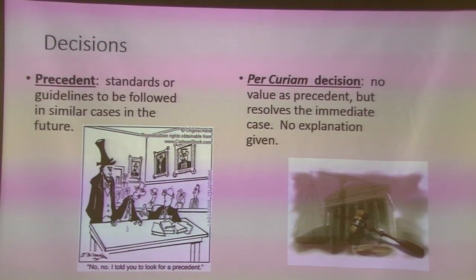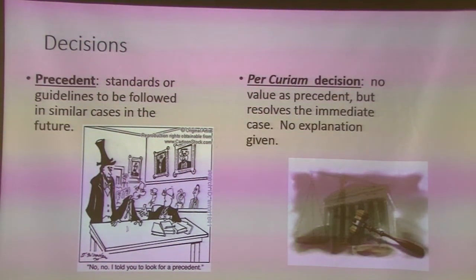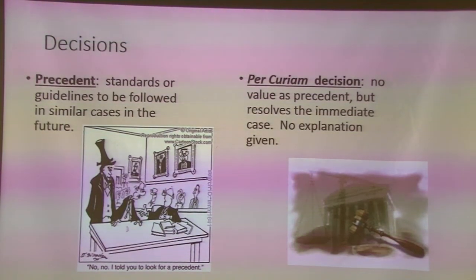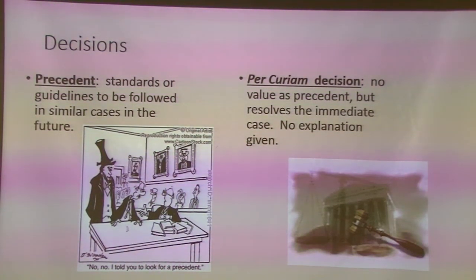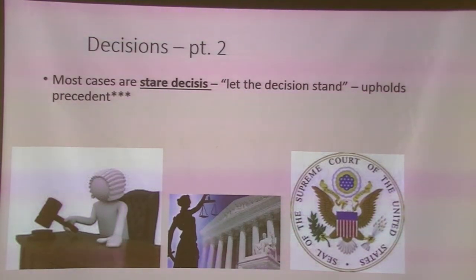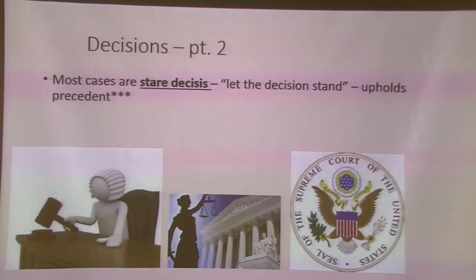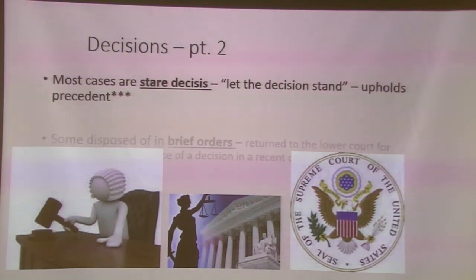Two phrases you need to know from our government basics. Precedent is the whole basis of our court system — when you go to law school, you learn different precedents, and opinions are very important because they establish precedent. If a decision here has no precedent, it just solves the immediate case; this is what happens in probably 75–80% of our cases. Stare decisis means 'let the decision stand' — it upholds precedent of past cases, whether from the Supreme Court or appeals court.